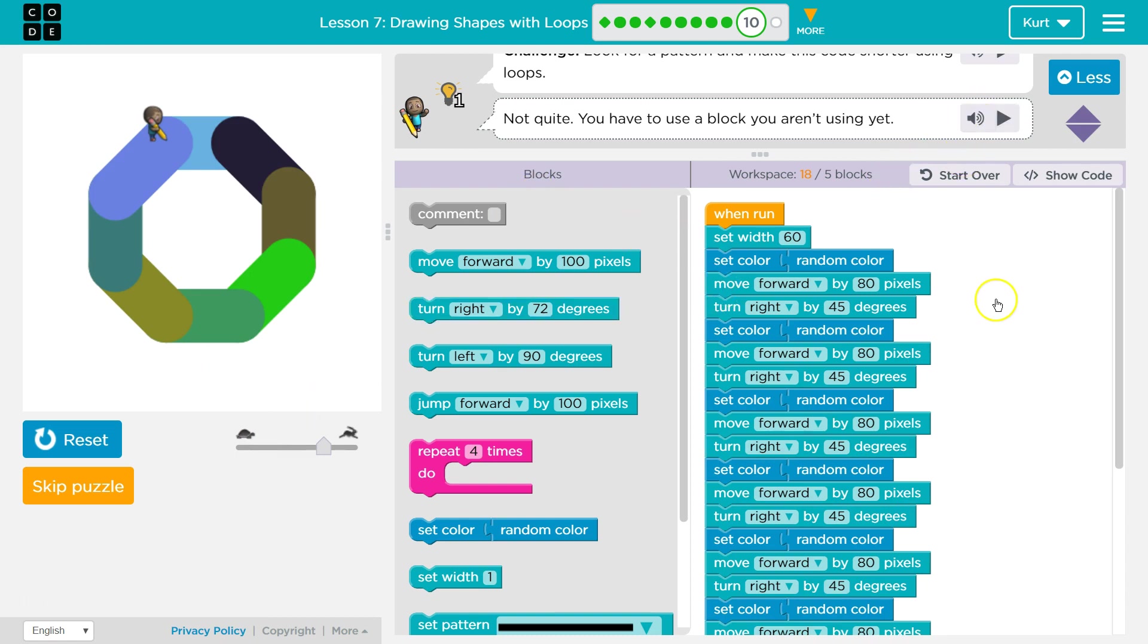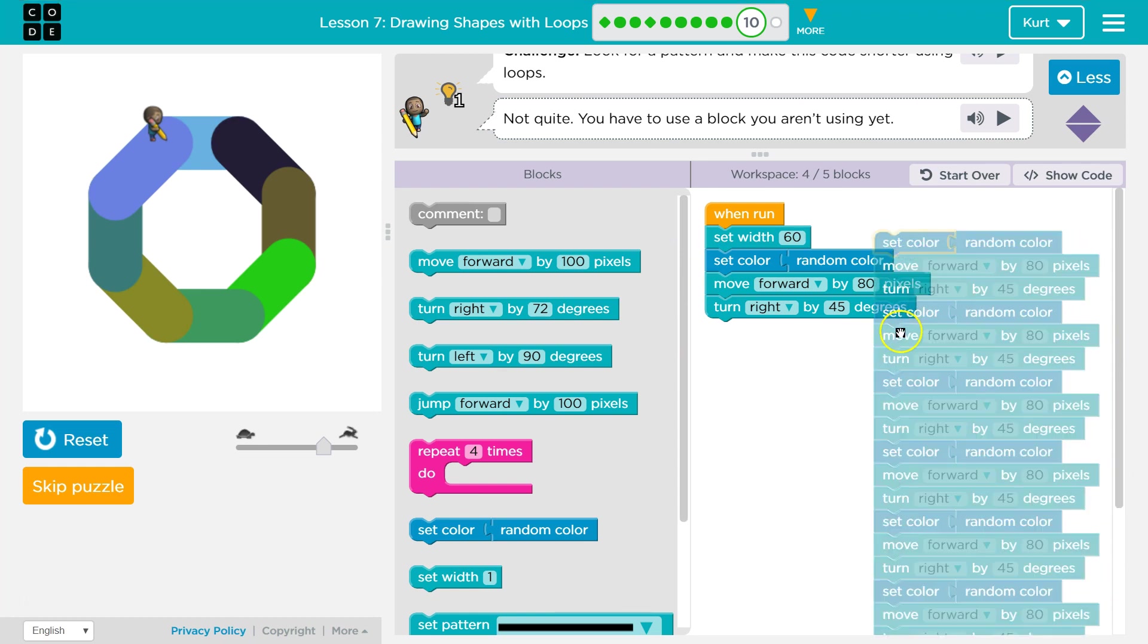So now they want us to use a loop to repeat our code. Let's look for repeating code. We make our pin width 60, then set the random color, then move forward by 80 pixels which draws the first line, then turn right by 45 degrees. Now we set the color again. That looks similar. Move forward by 80, exactly the same. Turn right 45. Wait a minute, we're repeating code now.